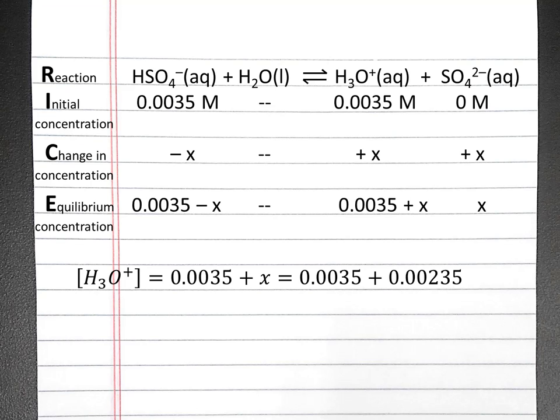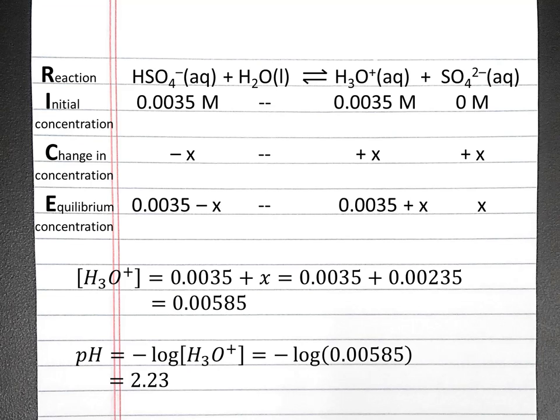So now we can plug in our value of x into our expression for the hydronium ion concentration at equilibrium. So that will be 0.0035 plus x, which is 0.00235, and we'll end up with 0.00585. To calculate the pH, we'll take the negative log of this hydronium ion concentration, and that will equal 2.23. So the pH of our sulfuric acid solution is 2.23.